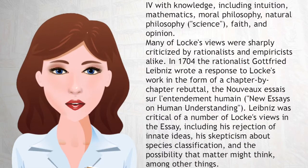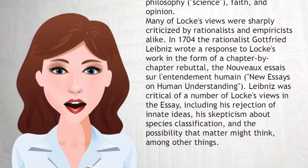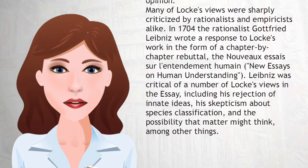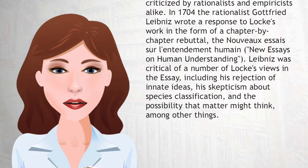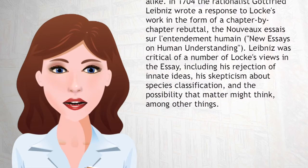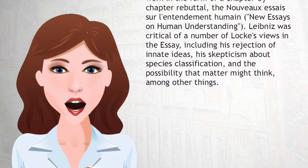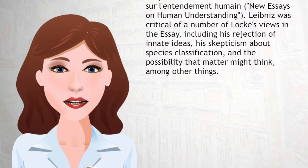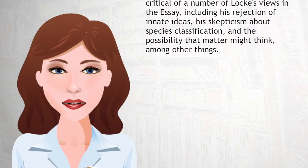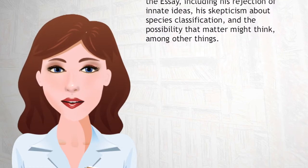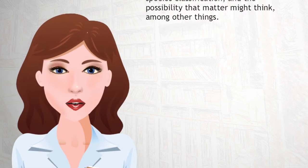Many of Locke's views were sharply criticized by rationalists and empiricists alike. In 1704 the rationalist Gottfried Leibniz wrote a response to Locke's work in the form of a chapter-by-chapter rebuttal, the Nouveaux Essais sur l'Entendement Humain, or New Essays on Human Understanding. Leibniz was critical of a number of Locke's views in the essay, including his rejection of innate ideas, his skepticism about species classification, and the possibility that matter might think, among other things.